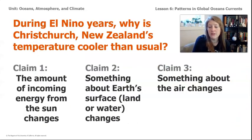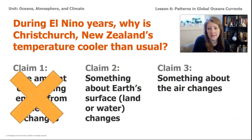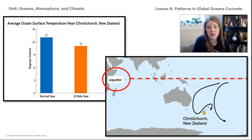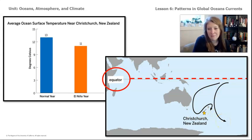Using what we've learned so far, we can eliminate claim one. We know that the amount of energy received from the sun is not changing during El Niño years. So far, you've learned about two things that affect Christchurch, New Zealand's air temperature: its latitude and the ocean current that passes its shore. You also know that this ocean current comes from the equator, which is a location that receives a lot of energy from the sun. We can see these currents moving past Christchurch, New Zealand, and we know that the current affects the ocean surface temperature.